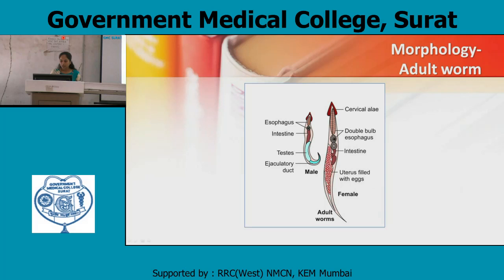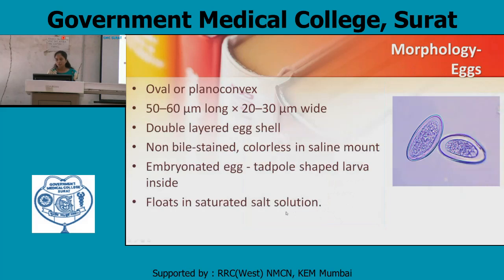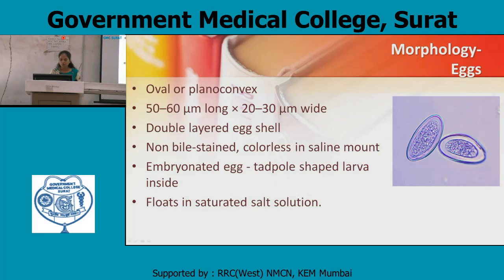Morphology of eggs: eggs are plano-convex or oval, 50 to 60 micrometers by 20 to 30 micrometers wide. They have a double-layered egg shell and are non-bile stained, colorless in saline mount. The embryonated egg contains a tadpole-shaped larva inside, and floats in saturated salt solution.